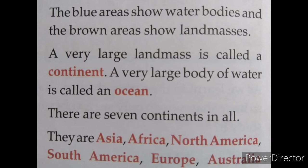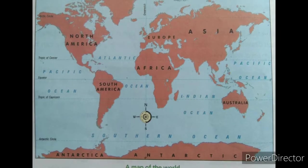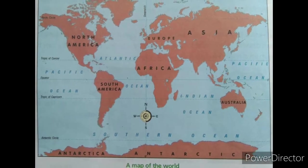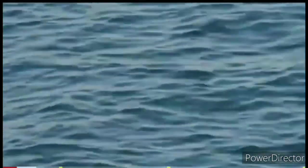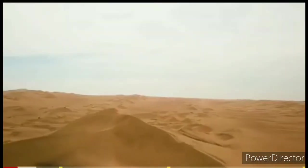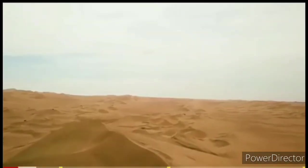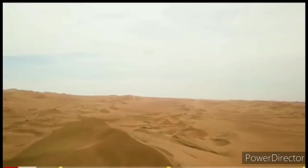A very large land mass is called a continent. A very large body of water is called an ocean. Remember: the large wide area of land mass is called a continent, and the large area of water body is called an ocean.